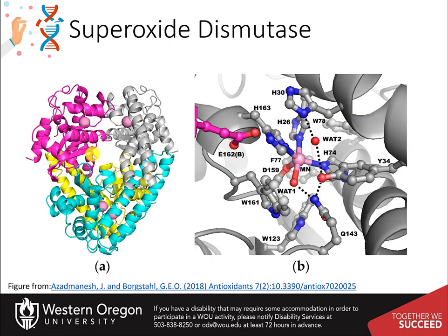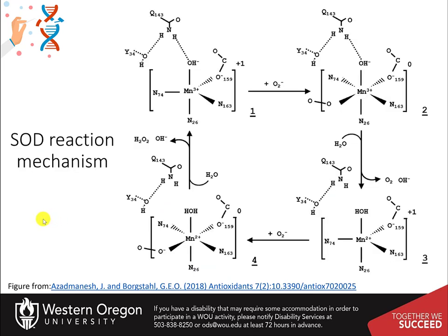The human SOD enzyme is a tetramer, where each subunit contains a manganese ion at the catalytic center, indicated by pink spheres. In the active site, shown in panel B, the red spheres designate oxygen, blue denotes nitrogen atoms, gray denotes carbon, and magenta denotes carbon atoms from the adjacent subunit. The dashed lines represent the hydrogen bond network, hypothesized to be the proton relay to the manganese ion used for catalysis. This schematic shows the cyclic manganese reduction and then oxidation to produce a molecule of oxygen and peroxide.